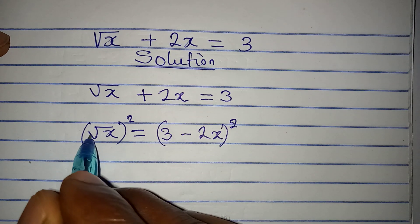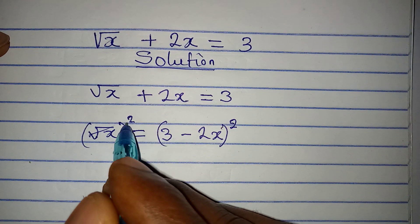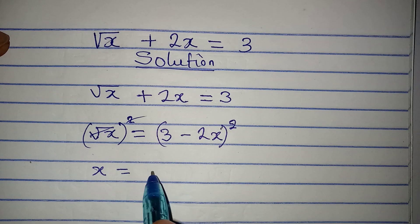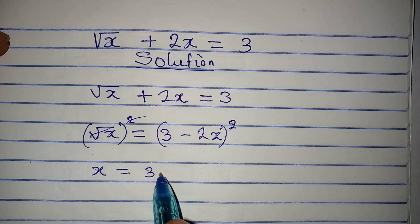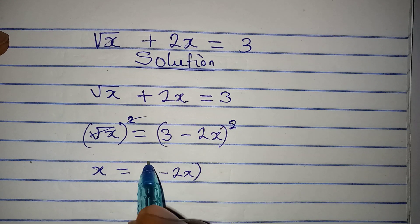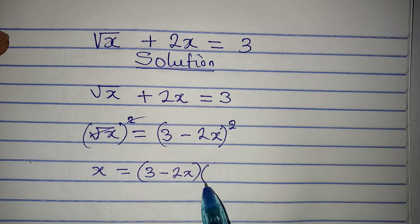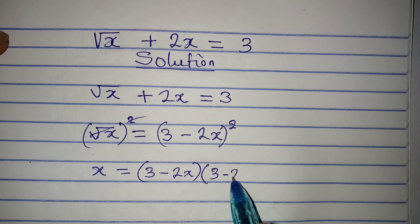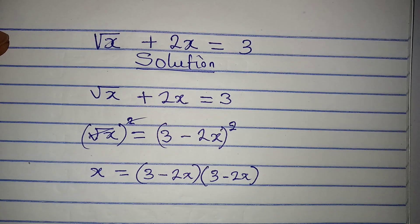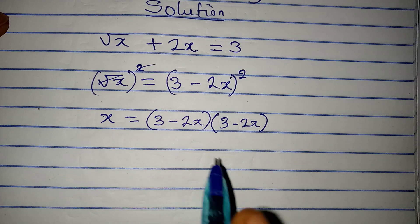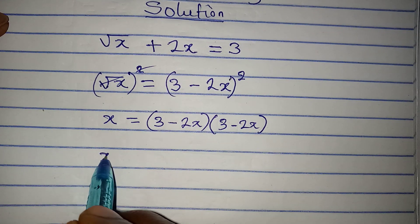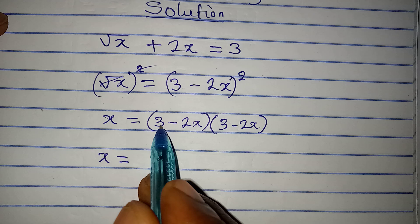The square root and square will cancel, so x will be equal to 3 minus 2x times 3 minus 2x. Now what I'm going to do is open the bracket.